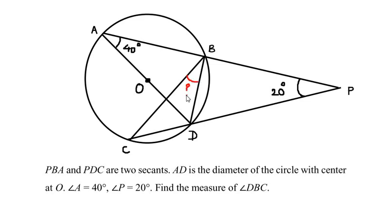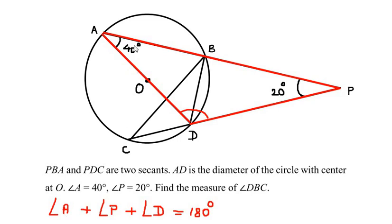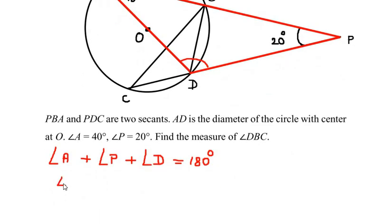We need to find out the value of this small angle. Let us start with the triangle which has the most information, which is triangle APD. In this triangle, the value of angle A is given and the value of angle P is given. Using the angle sum property of the triangle, we can find out the value of angle D. So we can write: angle A plus angle P plus angle D equals 180 degrees. Angle A is 40 and angle P is 20.